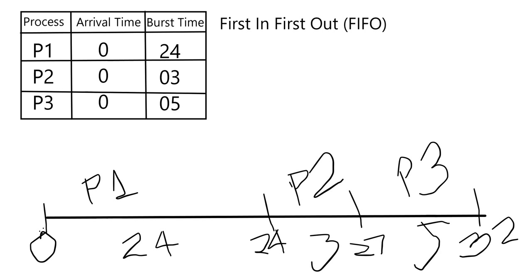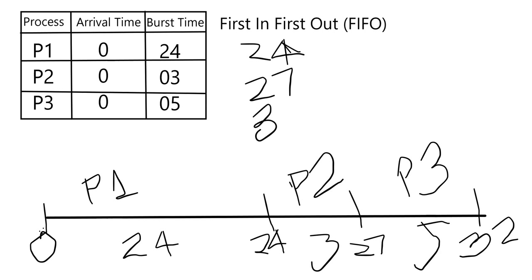Now let's calculate some scheduling criteria. First, the turnaround time for each process. Turnaround time is the time a process takes from the point it is scheduled to the point it completes. For P1, the turnaround time is 24. For P2, completion minus arrival = 27 minus 0 = 27. For P3, it is 32 minus 0, which equals 32.